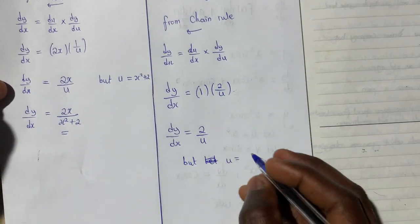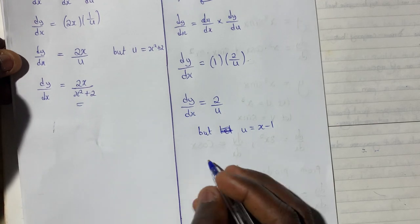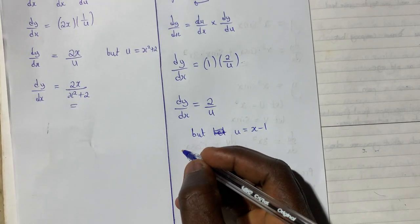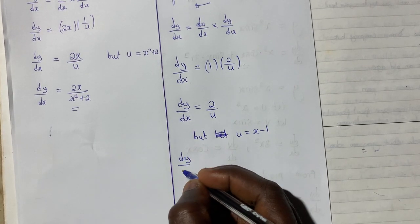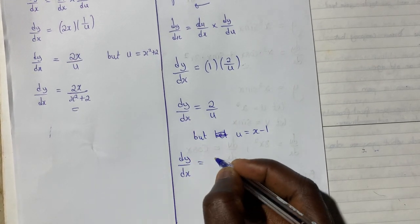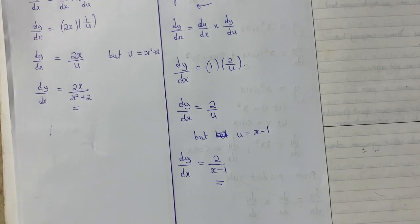But u was equal to x minus 1. So I'll put it back here, giving me the result dy dx giving me 2 all over x minus 1. And this becomes my final answer.